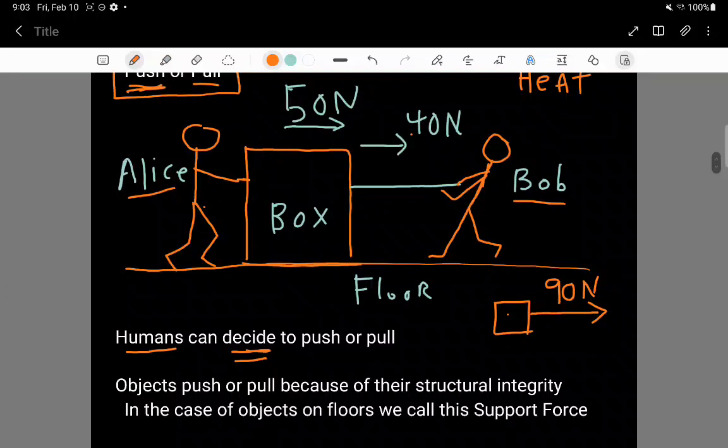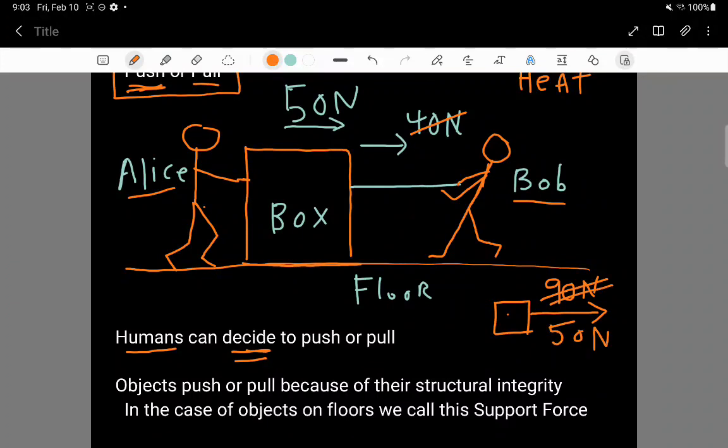This 40 newton force would drop off to zero, but if Alice keeps pushing, then it's not 90 newtons anymore, it's just 50 newtons because Bob is taking a break.